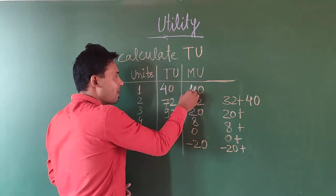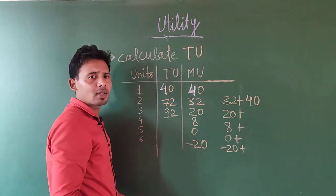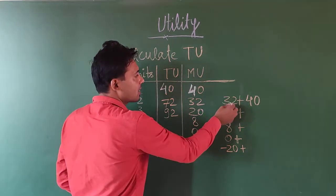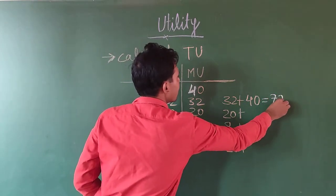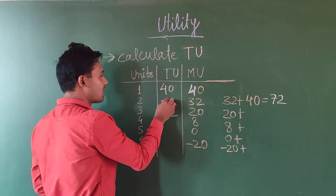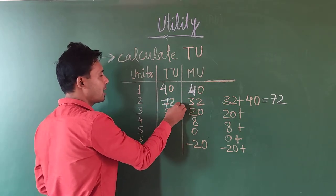This plus this has to be our total utility because marginal utility is the additional. So what has been added to our 40? 32 will be added. Like this, 32 plus 40 is equal to 72, and that is the number we have written here.